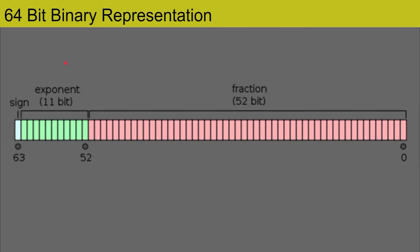The third part is the fraction, also called mantissa or significand. This part is the largest part — most of the chunk is occupied by the mantissa, and it requires 52 bits.